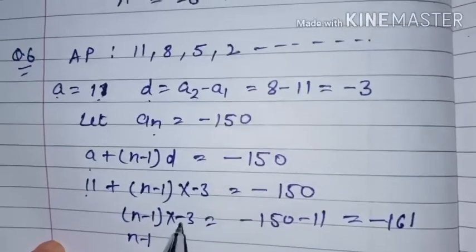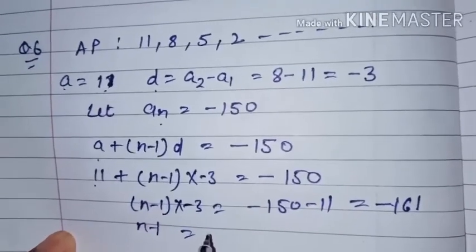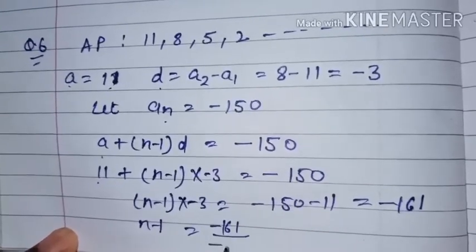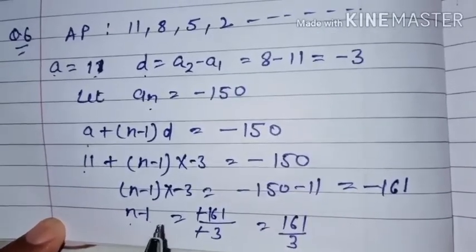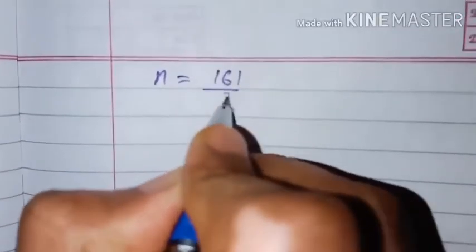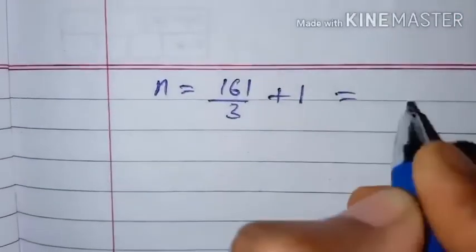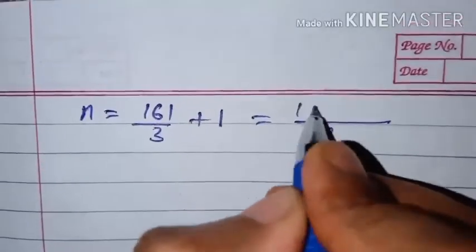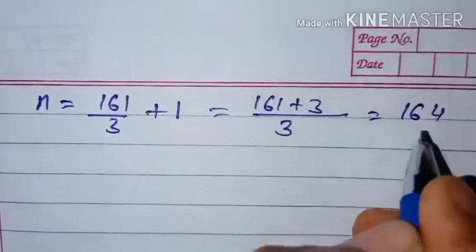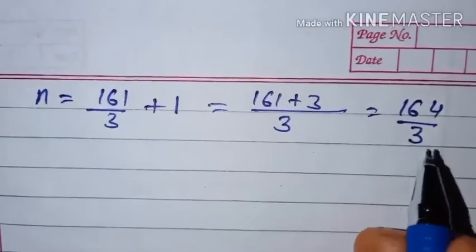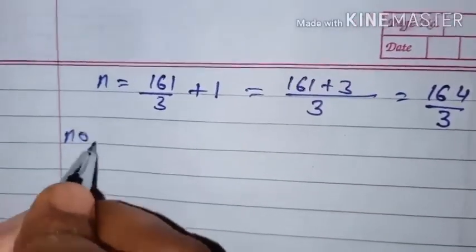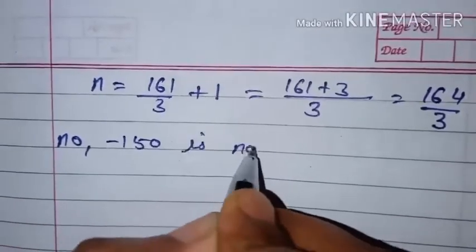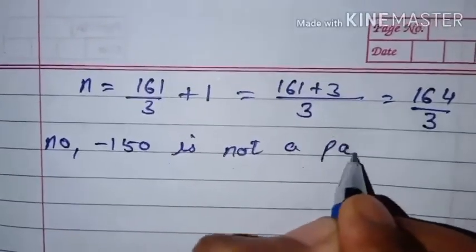Taking minus 3 to the right hand side as division: N minus 1 equals minus 161 divided by minus 3. The minus signs cancel, giving 161 by 3. Taking minus 1 to the right hand side: N equals 161 by 3 plus 1. Taking LCM: 161 plus 3 gives 164 by 3. The value of N is in fractional form, so minus 150 is not a part of this AP.